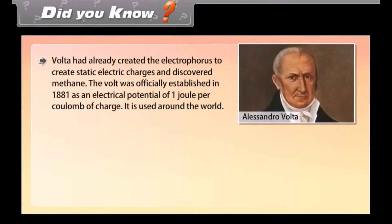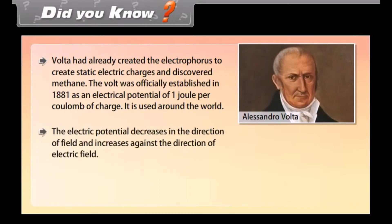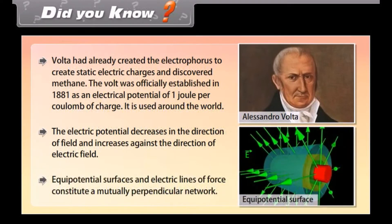Did you know? Volta had already created the Electrophorus to create static electric charges and discovered methane. The volt was officially established in 1881 as an electrical potential of one joule per coulomb of charge, and it is used around the world. The electric potential decreases in the direction of the field and increases against the direction of the electric field. Equipotential surfaces and electric lines of force constitute a mutually perpendicular network.